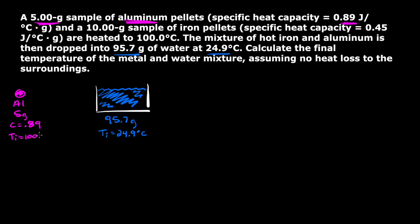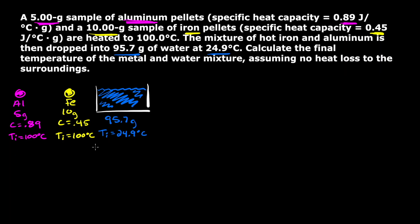Now for the iron — I'll draw that in yellow. It has a mass of 10 grams, labeled as Fe. Its specific heat C is equal to 0.45 joules per gram per degree Celsius, and its initial temperature is also 100 degrees Celsius, the same as the aluminum.